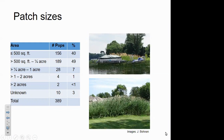We found that most patches are quite small — about 90% of the populations we identified are less than a quarter acre. So while we have close to 400 populations, most of them are quite small. In fact, only about six populations are an acre or more in size. That's encouraging in terms of potential to respond effectively.